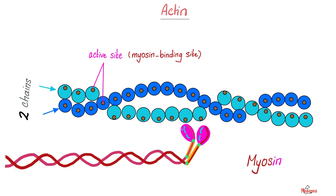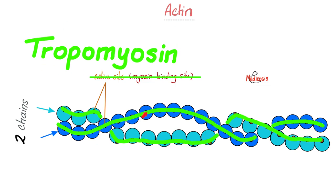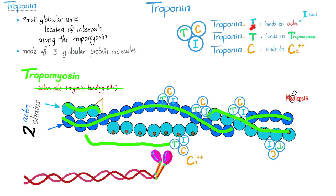Actin is the filament and has active sites. Myosin extends the cross bridges and attaches to the active sites of actin, causing contraction. But you don't need to contract your skeletal muscles all the time — that's why you need tropomyosin to cover the active sites on actin, and troponin with its three components: Troponin I binds actin (the I-band, isotropic); Troponin T binds tropomyosin; Troponin C binds calcium. When calcium binds Troponin C, Troponin T removes tropomyosin, exposing the active sites, myosin binds actin, and that's your contraction.